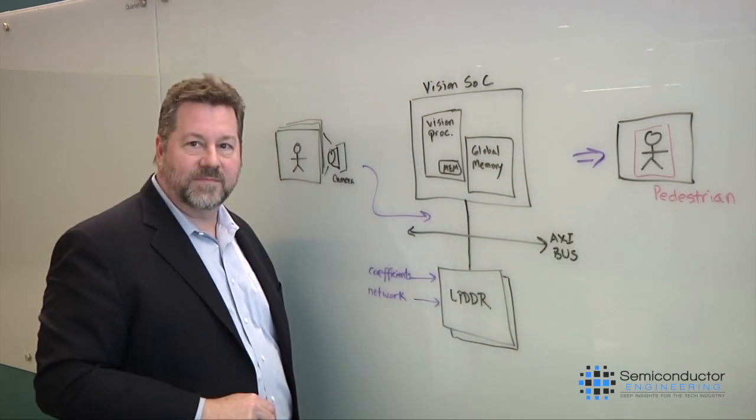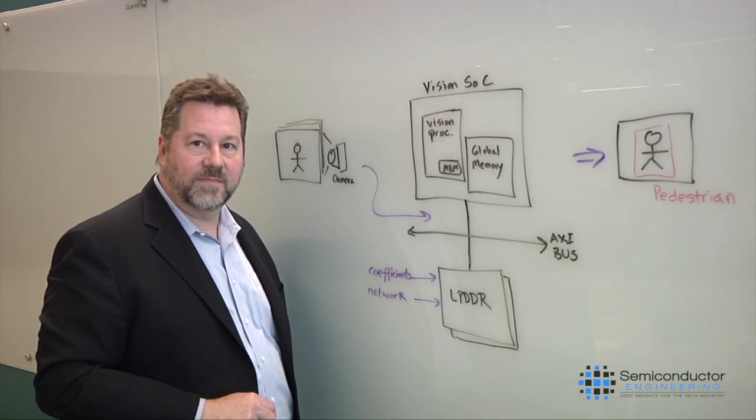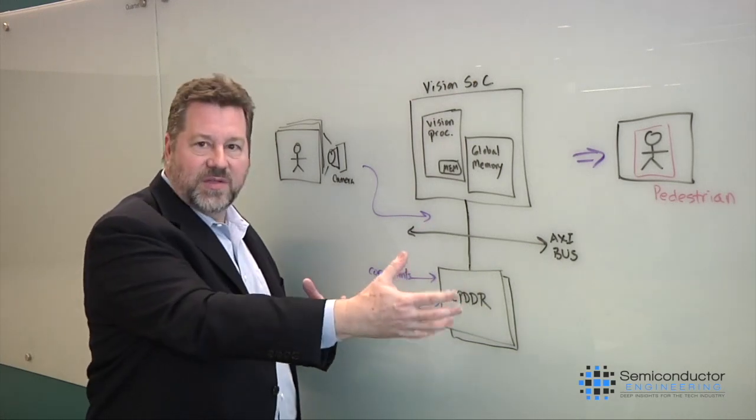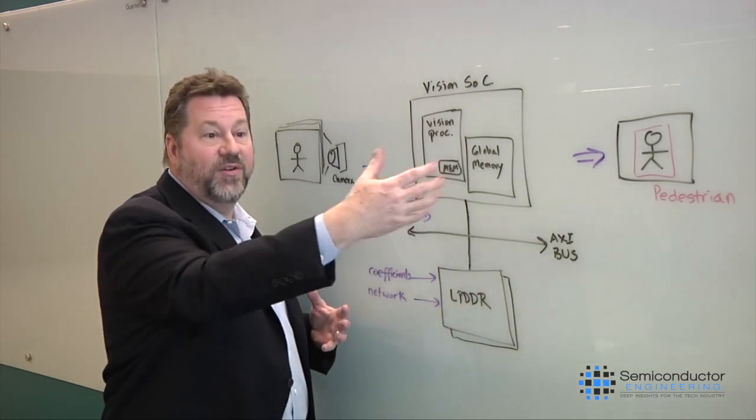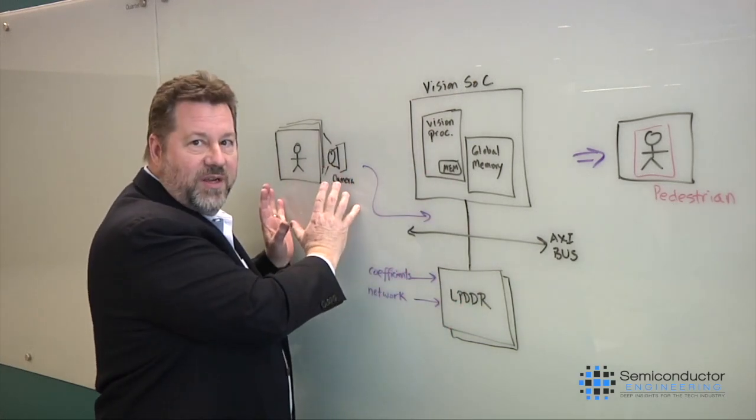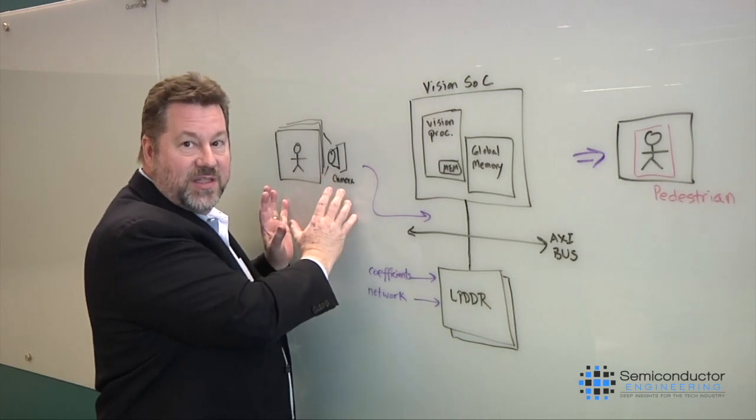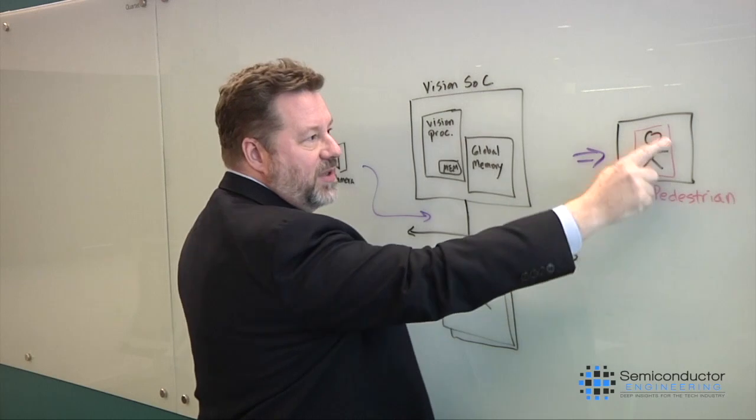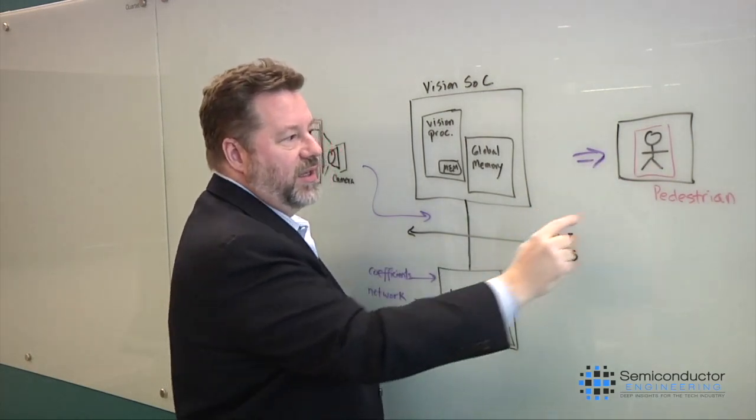And because you have so much data, you don't want to move this from the camera all the way into a central computer, right? Right. And whether it's going from a car from the edge of the car to a central part of the car or whether you're going to the Internet, transferring all of this video data is a significant challenge, not to mention power. So you want to process it locally, and then what you're outputting is just maybe four boxes of location and text.